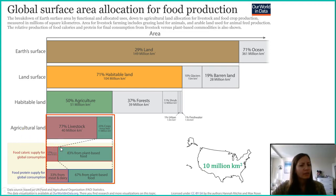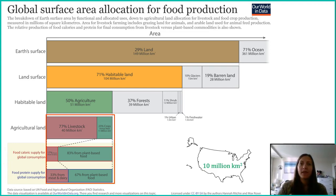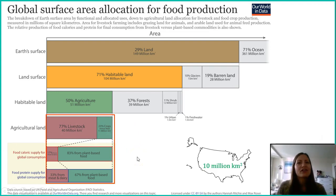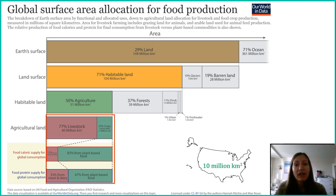You might think that if we're using all this land for livestock, we must be getting a lot out of it. But in reality, we don't. Looking at food caloric supply — the calories you and I are consuming — only about 17% of our caloric supply comes from meat and dairy products from livestock. An overwhelming 83% of our calories comes from plant-based foods: grains, fruits, and vegetables. These two figures demonstrate the energy transfer concept — eating crops directly means no middleman, less energy loss. When we feed crops to cows, a lot of that energy is lost.